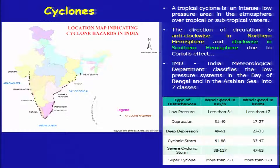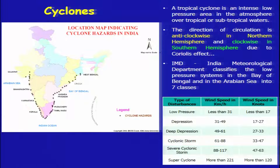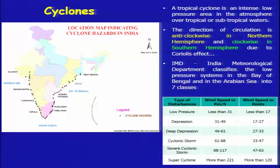Tropical cyclones are very intense because of intense low pressure areas in the atmosphere over tropical and subtropical waters. One of the most important points to remember is the direction of circulation — anti-clockwise in the northern hemisphere and clockwise in the southern hemisphere. This is due to the Coriolis effect.